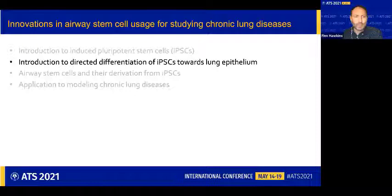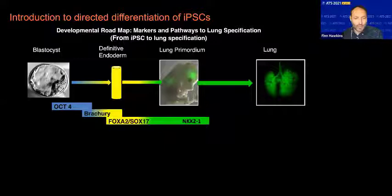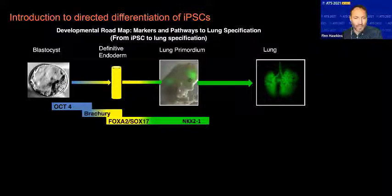I'm now going to introduce the concept of directed differentiation and how this applies towards generating lung epithelial cells. Essentially, directed differentiation refers to the process by which in vitro iPSC cells or ES cells are coaxed towards a tissue type of interest by trying to recapitulate the key developmental milestones that would occur in vivo. That is done through the addition of exogenous growth factors or inhibitors of signaling pathways at specific time points.